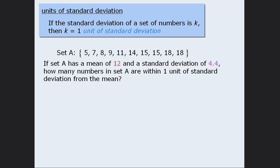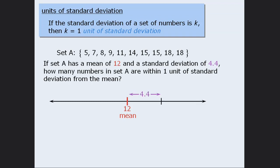Here's how we handle all questions like this. First, draw the number line and place the mean near the middle. Now mark a spot 1 unit of standard deviation to the right of the mean. Since this point is 4.4 units to the right of 12, the point is at 16.4. So we can say that 16.4 is 1 unit of standard deviation above the mean.